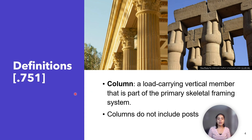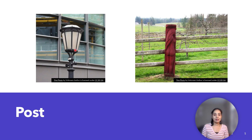We will see definitions according to section 0.751. First, column: a load-carrying vertical member that is part of the primary skeletal framing system. Columns do not include posts. These are some pictures of columns — this is a light post and this is a post in a fence; these do not qualify as columns.